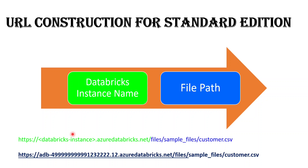For example, if my Databricks workspace is 'adb' followed by some workspace ID digits, then '.azuredatabricks.net', I add 'files' as a common keyword and then the folder and file name. This is how we construct the URL for Standard Edition. I hope you have learned how to construct a URL for both Community Edition and Standard Edition.